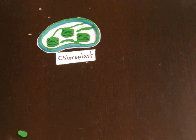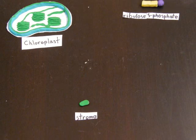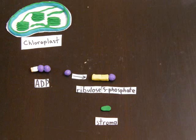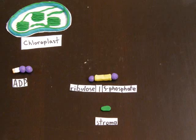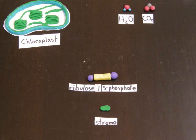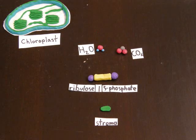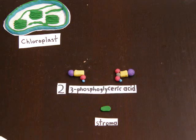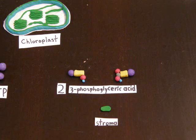This is the light-independent reaction. This process is also called the Calvin cycle. With the help of enzymes, the ribulose-5-phosphate causes the ATP to part with a high-energy phosphate to become ribulose-1-5-phosphate. It then captures a water and carbon dioxide molecule to become unstable, splitting it to become two molecules of 3-phosphoglyceric acid.